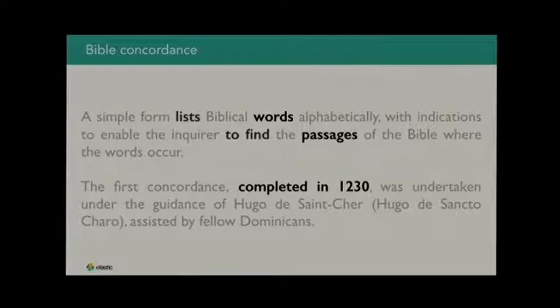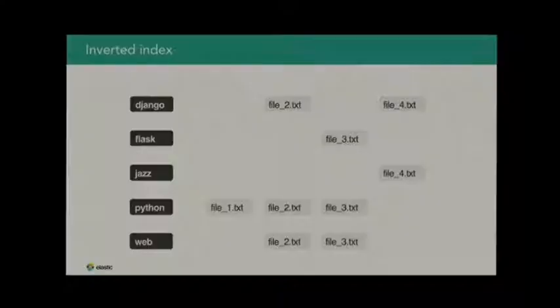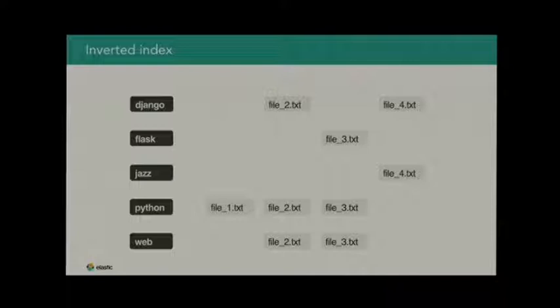The index points you to all the important concepts, places, or names in the book along with the list of pages. That is what we call an inverted index — a data structure that we use today. It was first created in 1230, and we are still using it to this day to power search. Except now, instead of paper, we use computers, but the theory is the same.